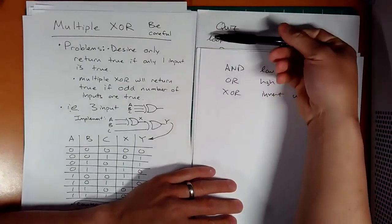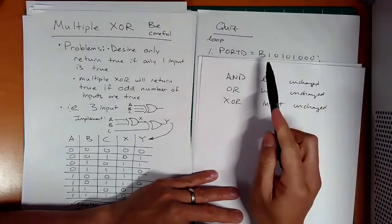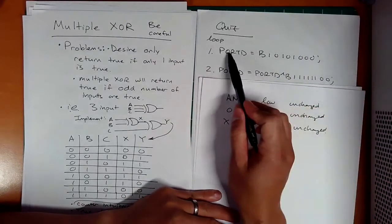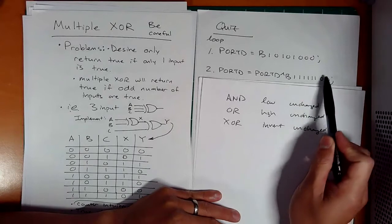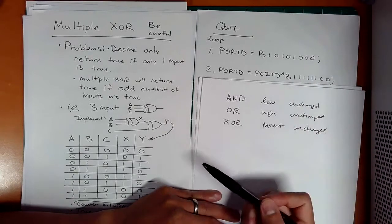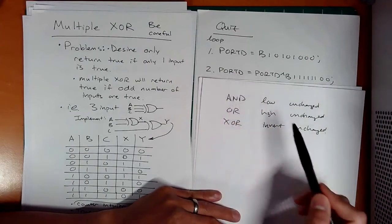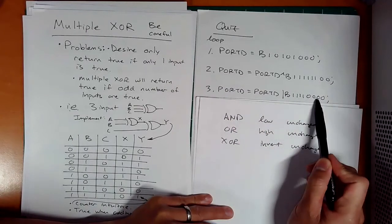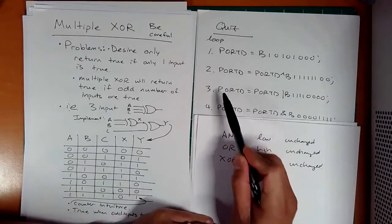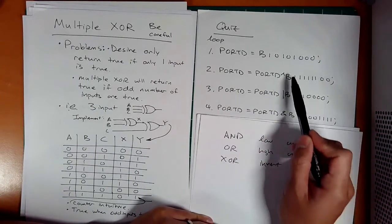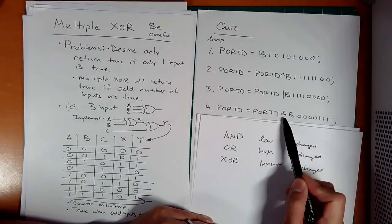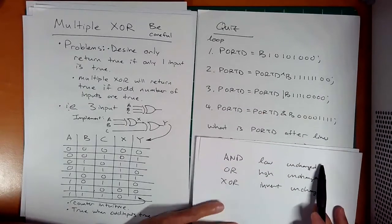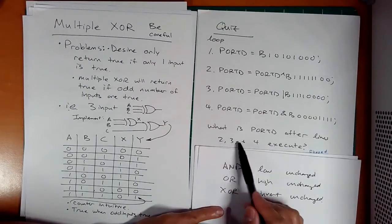Let's say we have one loop and we first set this variable as 1, 0, 1, 0, 1, 0, 0, 0. The first thing we do is take this and do an exclusive OR with this random set of binary inputs. What is the new variable at step 2? Then we take this answer and plug it in and do an OR with this set. What's that answer? Then we'll do it one more time with an AND. So exclusive OR, this is an OR, and this is an AND, all bitwise. What are these values at these different steps? What are these values after 2, 3, and 4 execute?